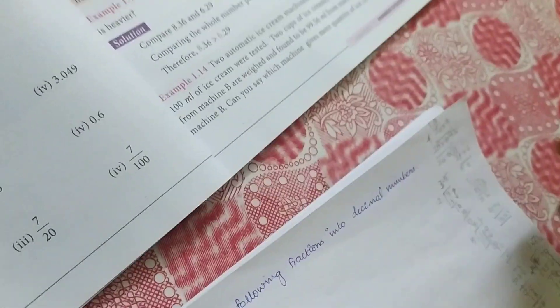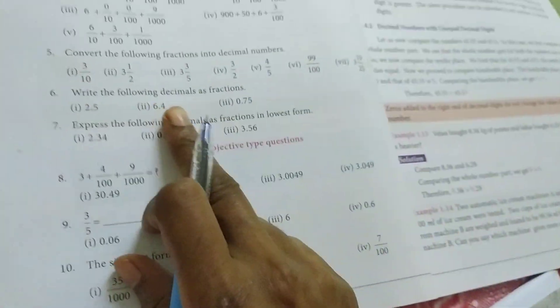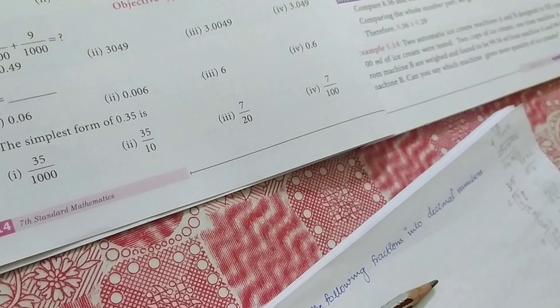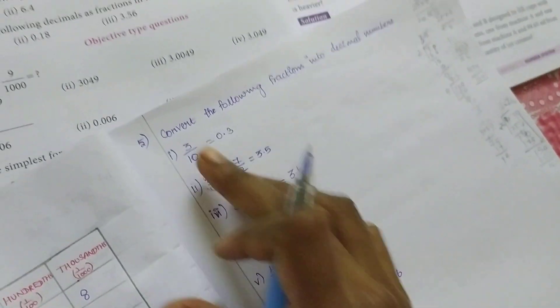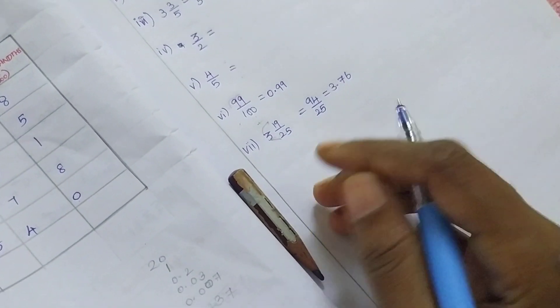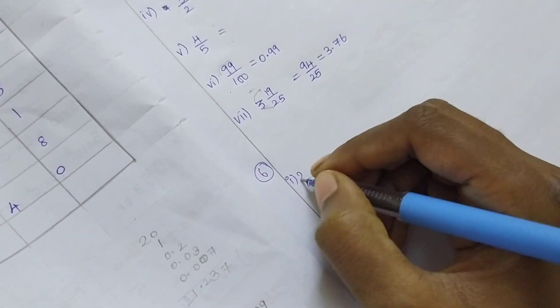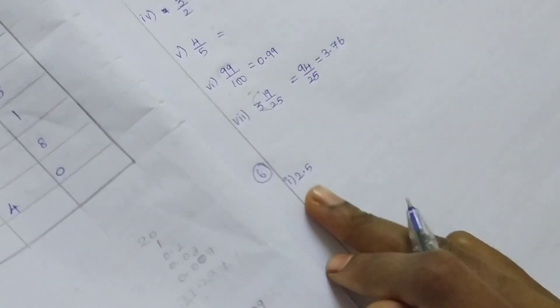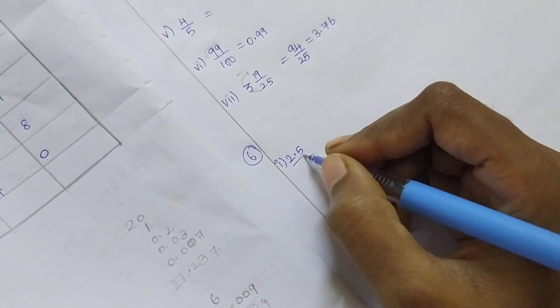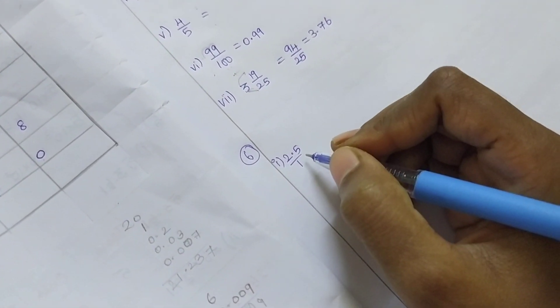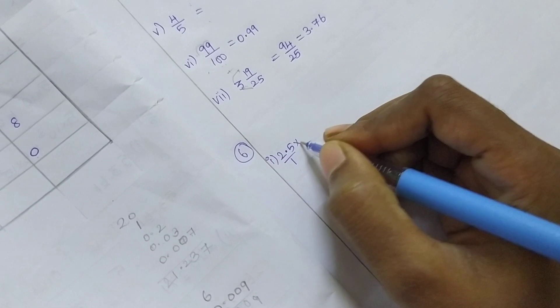We're having homework for you. Write the following decimal as a fraction - convert decimal as a fraction. What they given: 2.5. I already told, if you have a number like this, division of 1. Decimal means one point.